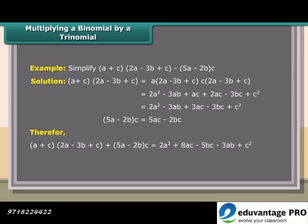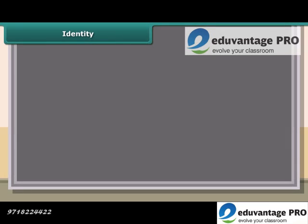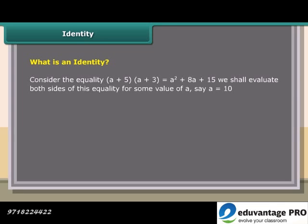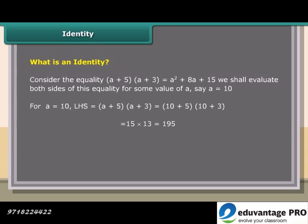Identity: consider the equality (a plus 5)(a plus 3) equals a² plus 8a plus 15. We shall evaluate both sides for some value of a. For a equals 10: LHS equals (10 plus 5)(10 plus 3) equals 15 into 13 equals 195. RHS equals 10² plus 80 plus 15 equals 195. Both sides are equal.